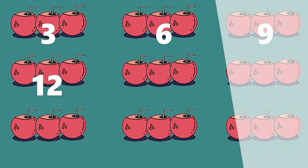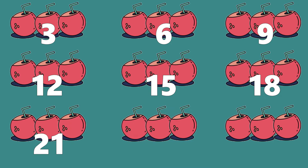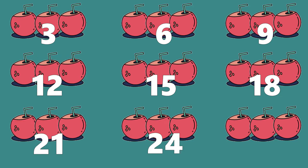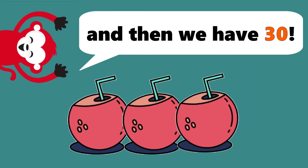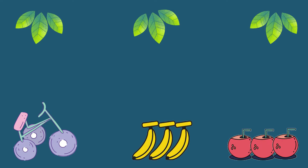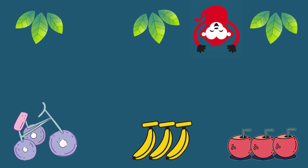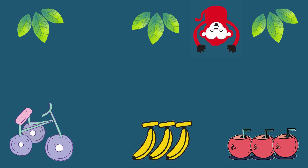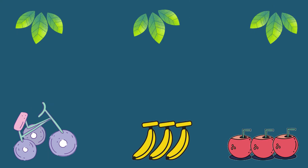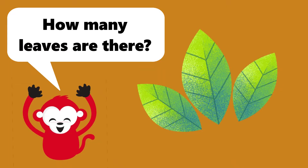3, 6, 9, 12, 15, 18, 21, 24, and 27. And then we have 30. How many leaves are there?